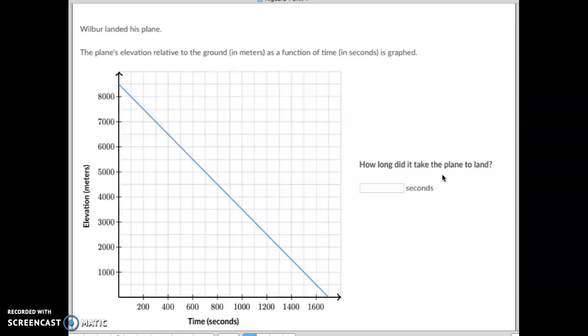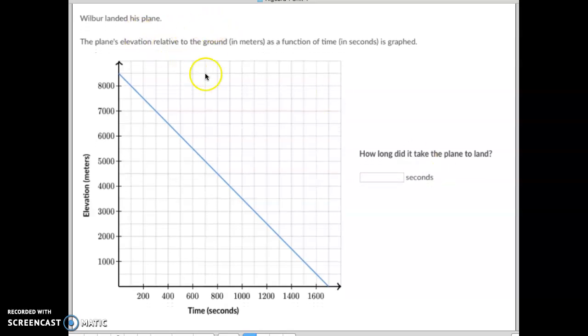Let's do one more just to make sure we're good with that. Wilbur's landing a plane. So he starts off right here, looks like at about 8,500 meters, and he's landing it, and it takes him that many seconds until right here he's landing that plane. Well, how many seconds did it take him to land the plane?